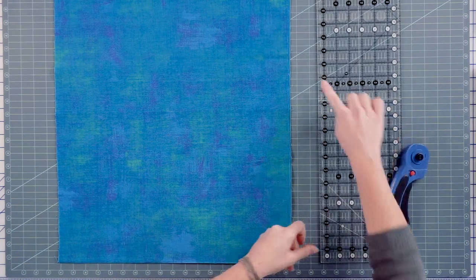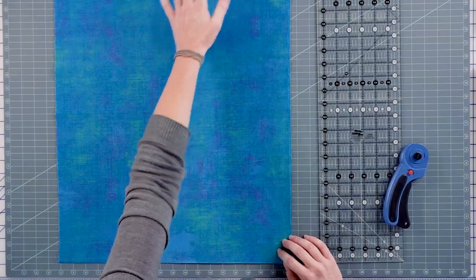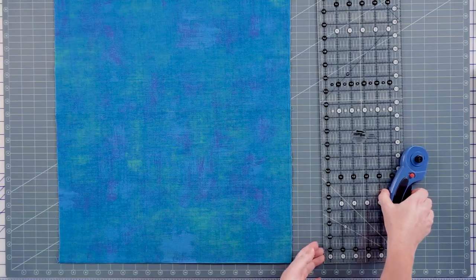You see how uneven this edge is? That's common. When fabric comes off the bolt, once you've pressed it, if you pre-washed anything, you're going to need to do a clean-up cut.